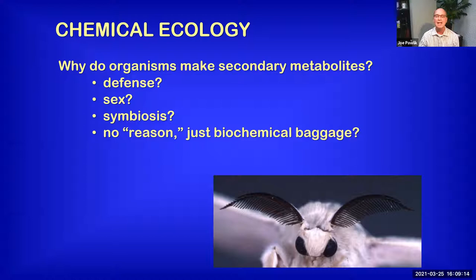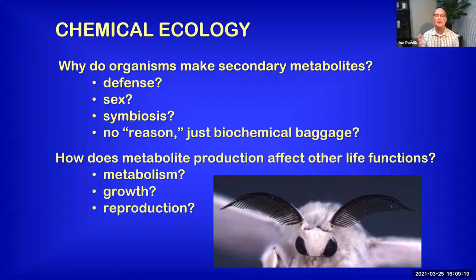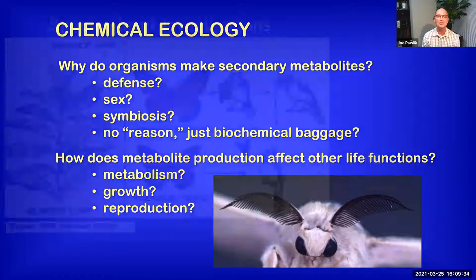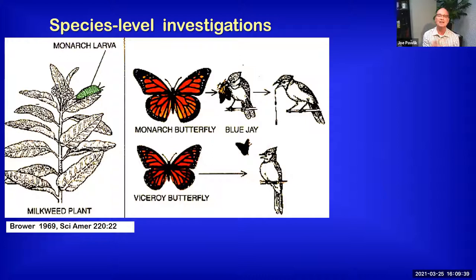In addition, chemical ecologists frequently want to know how the production of secondary metabolites affects other life functions, things like metabolism, growth, and reproduction. By and large, almost exclusively, studies in chemical ecology have been at the species level — really isolated to individual species and whatever species they're interacting with — a very narrow ecological level.